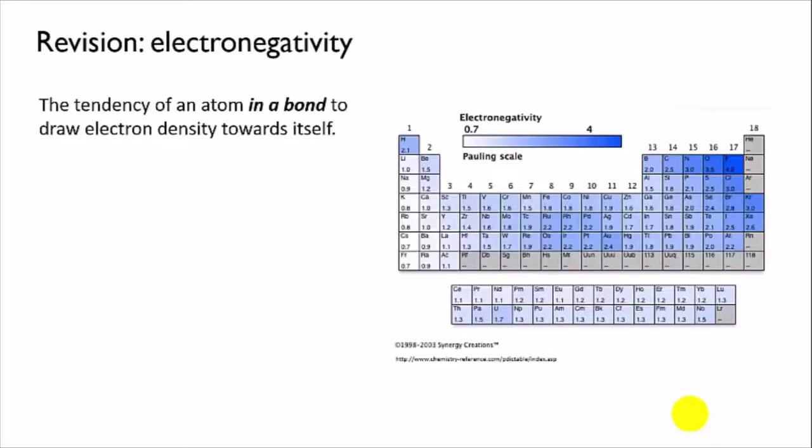Back in Unit 1, you were introduced to a number of periodic trends, one of which was electronegativity. This was defined as the tendency of an atom in a bond to draw electron density towards itself.